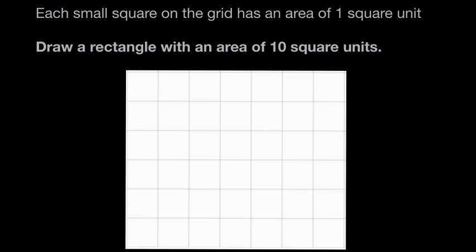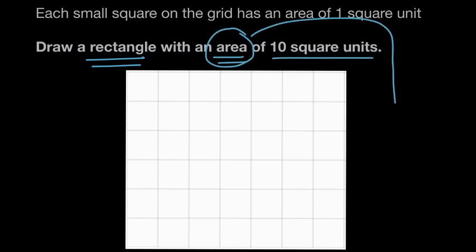And now we're asked to draw a rectangle with an area of 10 square units. Well this word area here is talking about how much space our shape covers. So our shape in this case is a rectangle, so we're being asked to draw a rectangle that covers 10 square units. And we know that each of these is one square unit, so we want a rectangle that covers 10 of the square units.